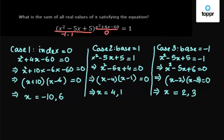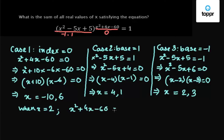We substitute the values from Case 3 into the power, x² + 4x - 60, and check if it is even. If even, the value satisfies the equation; if odd, we reject it. When x = 2, the index is 2² + 4(2) - 60 = 4 + 8 - 60 = -48, which is even, so x = 2 is accepted.